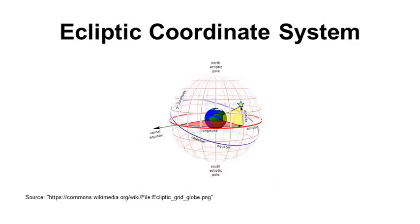In the ecliptic coordinate system, horizontal distances are measured in degrees of longitude, where zero degrees of longitude is the vernal equinox, when the ecliptic plane crosses the equatorial plane in the spring, and vertical distances are measured in degrees of latitude.